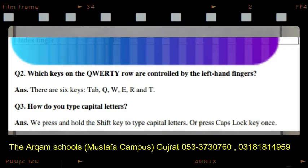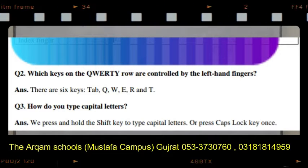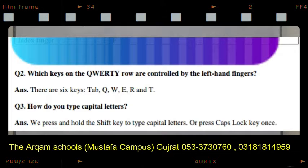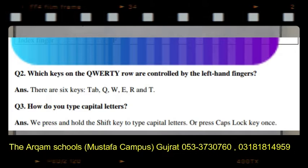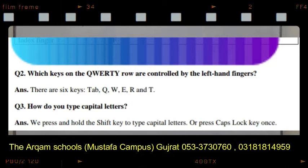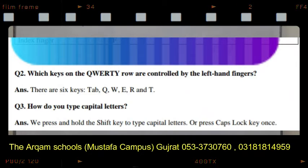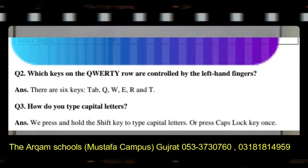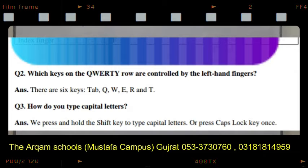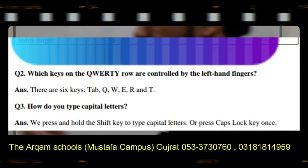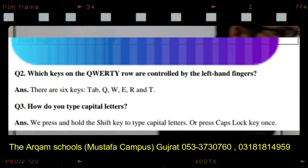ہم capital letters type کرنے کے لیے Shift key کو دباتے ہیں اور hold کرتے ہیں، اور اس کے ساتھ ہی جو word type کرنا چاہتے ہیں وہ type کرتے ہیں۔ Or press Caps Lock key once — یعنی Caps Lock key کو ایک دفعہ دبا دیں، تو پھر آپ جتنے بھی words لکھیں گے وہ سارے capital میں آئیں گے۔